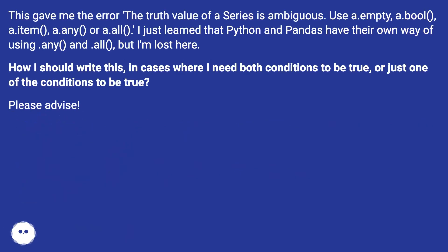This gave me the error: 'the truth value of a series is ambiguous. Use .empty, .bool, .item, .any, or .all.' I just learned that Python and pandas have their own way of using .any() and .all(), but I'm lost here. How should I write this in cases where I need both conditions to be true, or just one of the conditions to be true? Please advise.